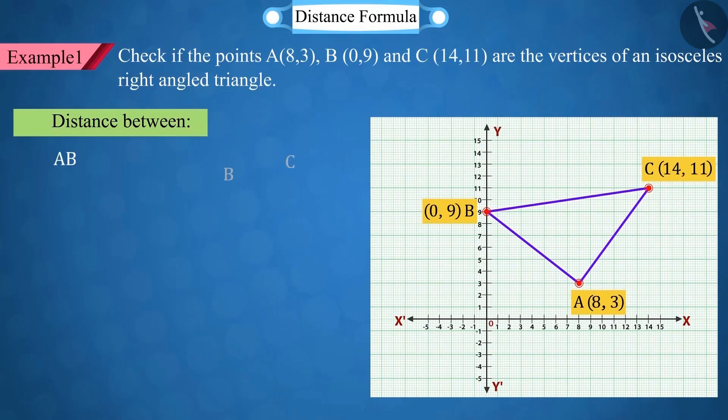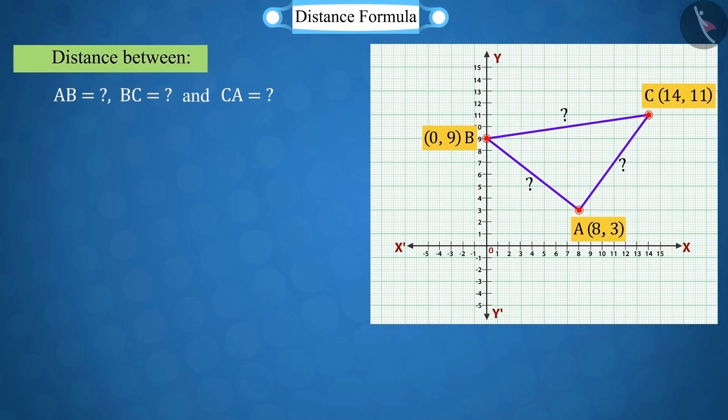Let's find the distances between AB, BC, and CA. Suppose the coordinates of point A, that is x₁, is equal to 8 and y₁ is equal to 3.